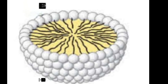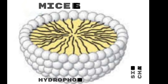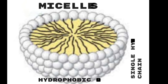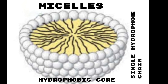A spherical micelle has a hydrophobic interior composed entirely of fatty acyl chains, but one of the fatty acyl chains is removed — so there is only one polar head group and one fatty acyl chain in a micelle.